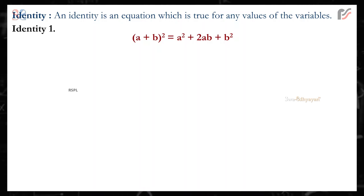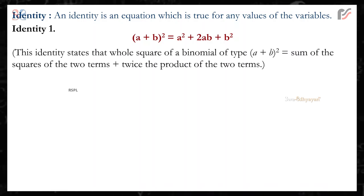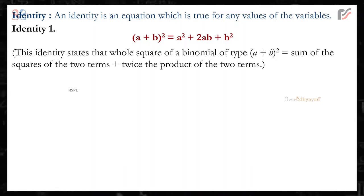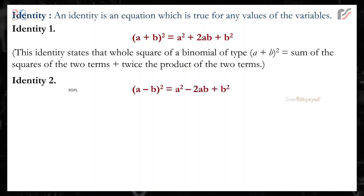Identity 1: (a + b)² is equal to a² + 2ab + b². This identity states that the whole square of a binomial of type (a + b) is equal to the sum of the squares of the two terms plus twice the product of the two terms.